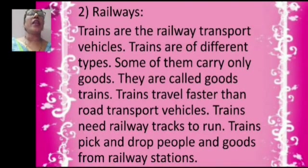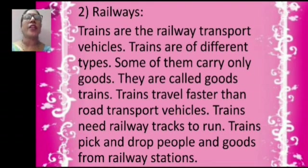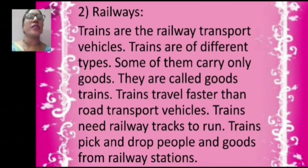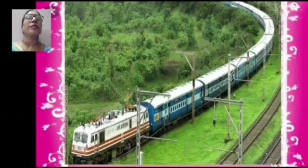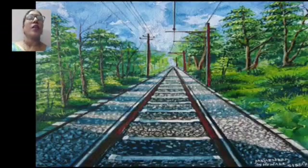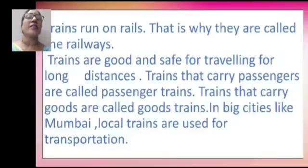Railways: Trains are the railway transport vehicles. Trains are of different types — some carry only goods, and they are called goods trains. Trains travel faster than road transport vehicles. Trains need railway tracks to run. Trains pick and drop people and goods from railway stations. This is a train. This is a railway track. Trains run on rails.